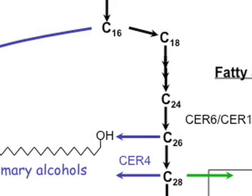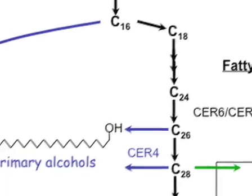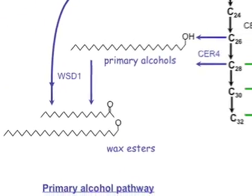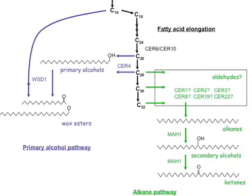Our overall goal is to understand how plants take ordinary fatty acids of 16 or 18 carbons, extend them to very long chains of 26 to 34 carbons, then modify them into protective lipids that we find at the plant surface. So let's get started and I'll show you how we identify cuticular wax mutants using forward and reverse genetic approaches.